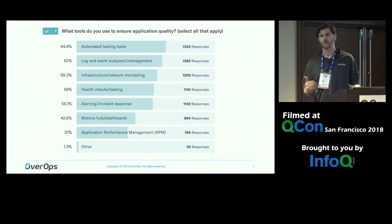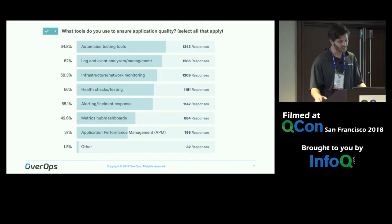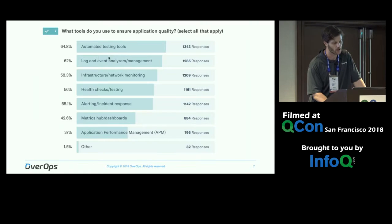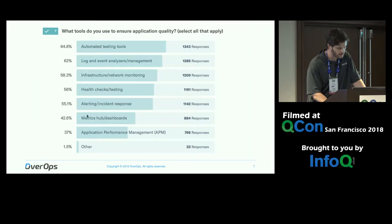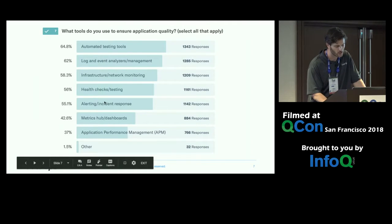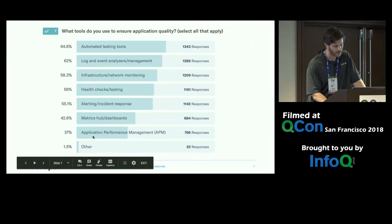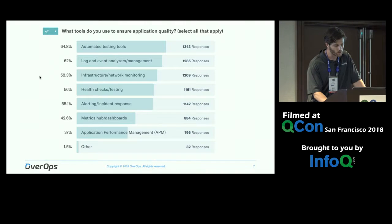Here's something interesting about what tools people use — it's kind of a hodgepodge, everybody essentially uses everything. Test automation and log analysis are still the most dominant ones, followed closely by infrastructure and network monitoring, and then dashboards. APMs are probably used by about a third of people, versus logs, which are almost double that.